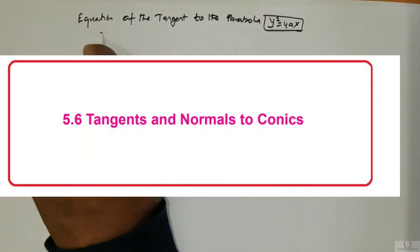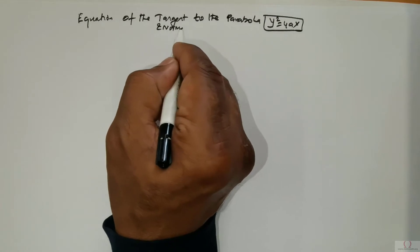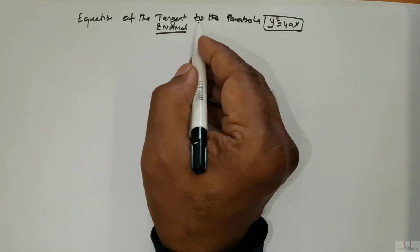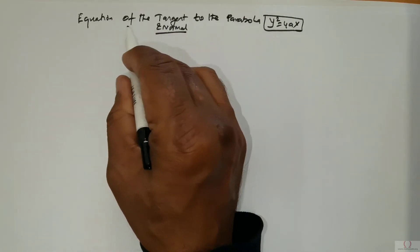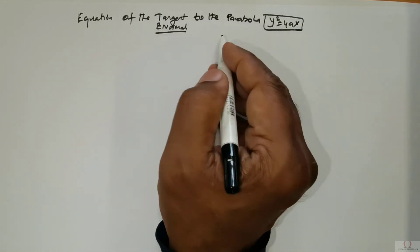Students, in this class we will be studying the equation of tangent and normal. Specifically, to start off, we will be talking about the equation of the tangent to the parabola y² = 4ax.